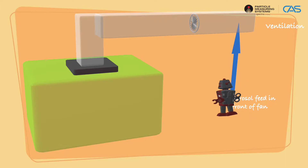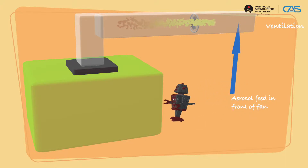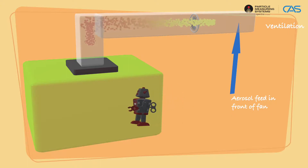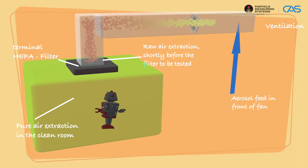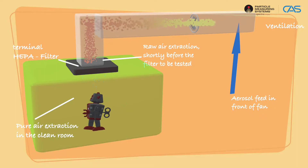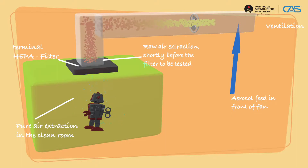At the beginning, the aerosol should, if possible, be applied in front of the fan using the aerosol generator, thus ensuring the ideal mixing of the air with the aerosol. The concentration of the so-called raw air is determined shortly before the HEPA filter is to be tested, with the help of a particle counter and a dilution stage.